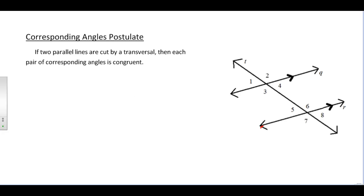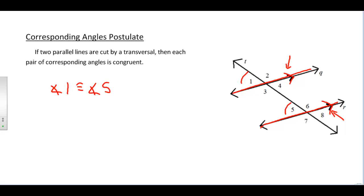Let's get started. The Corresponding Angle Postulate says if two parallel lines are cut by a transversal, then each pair of corresponding angles are congruent. It very specifically mentions you need to have two parallel lines. Lines q and r here are parallel because of the extra set of arrows, so all sets of corresponding angles would have to be congruent, making angles 1 and 5 congruent, as well as all other sets of corresponding angles.